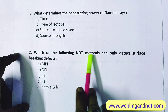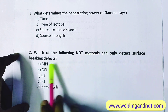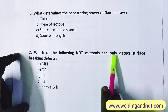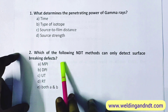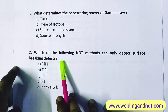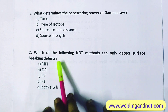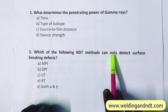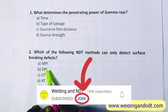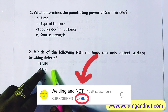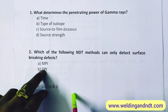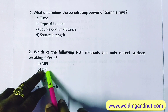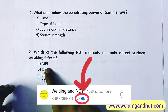Which of the following NDT methods can only detect surface breaking defects? Here the word 'only' is key. Surface breaking defects can be detected by DPI and MPI, but only surface defects are detected by dye penetrant inspection — also called liquid penetrant inspection or DPT. All names are the same. So the answer will be B.